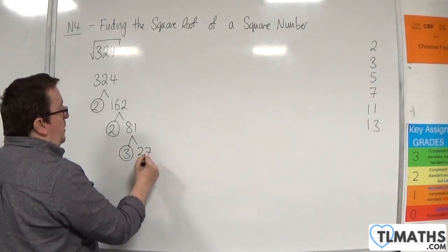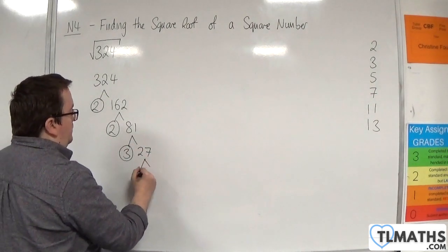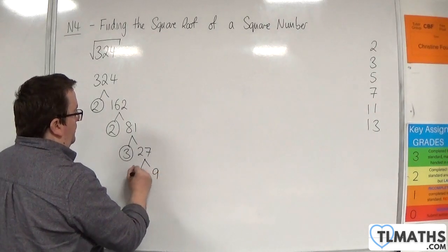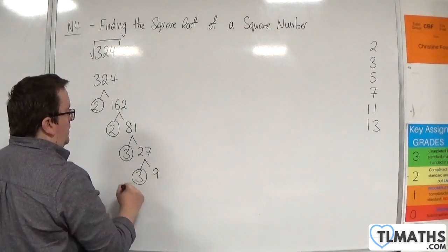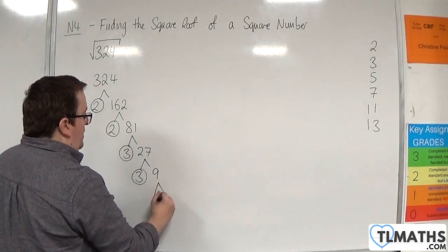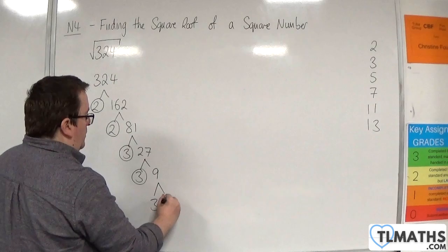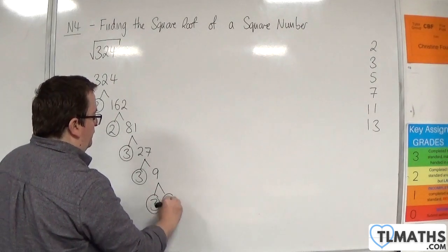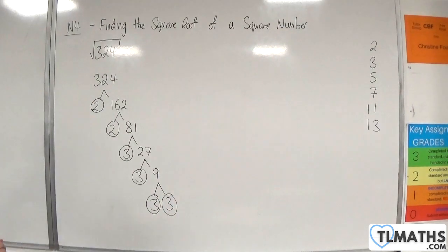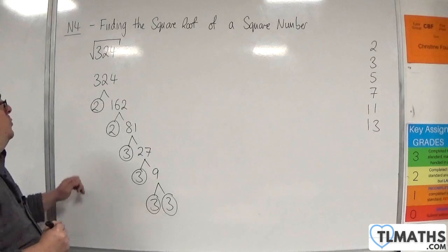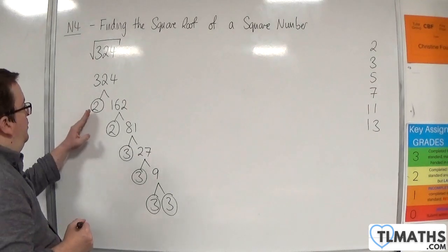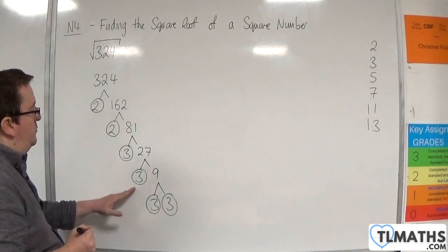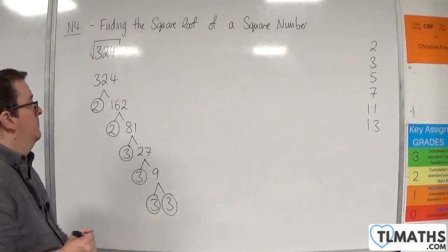3 goes into 27, 9 times. And 3 goes into 9, 3 times. So 324 is 2 times 2 times 3 times 3 times 3 times 3.